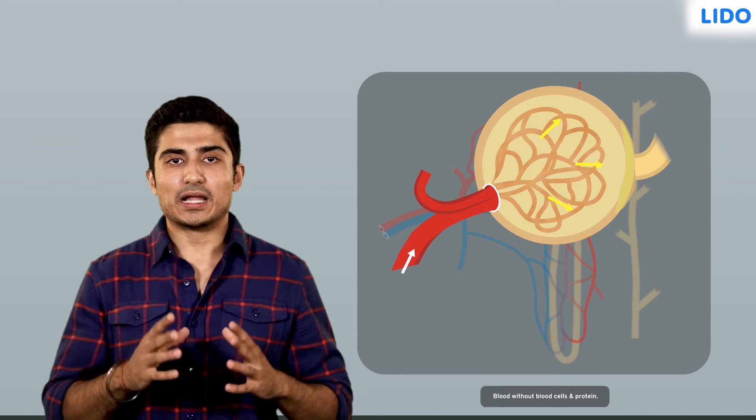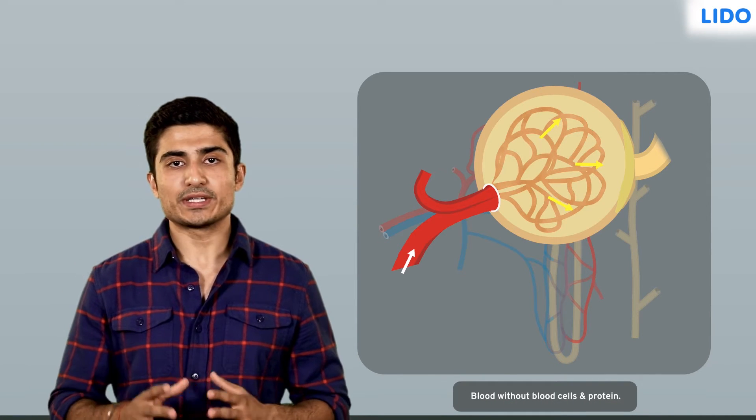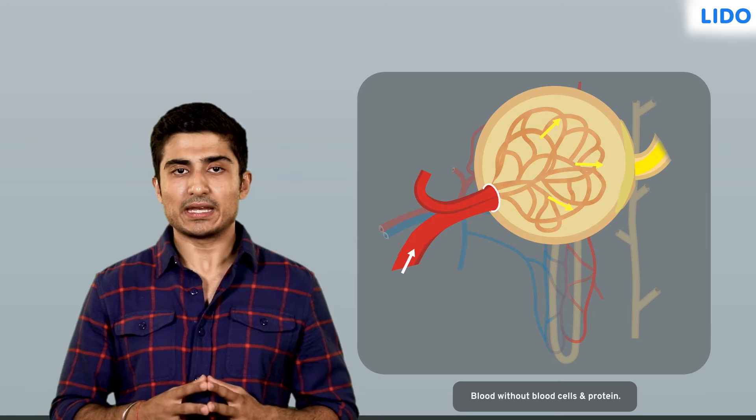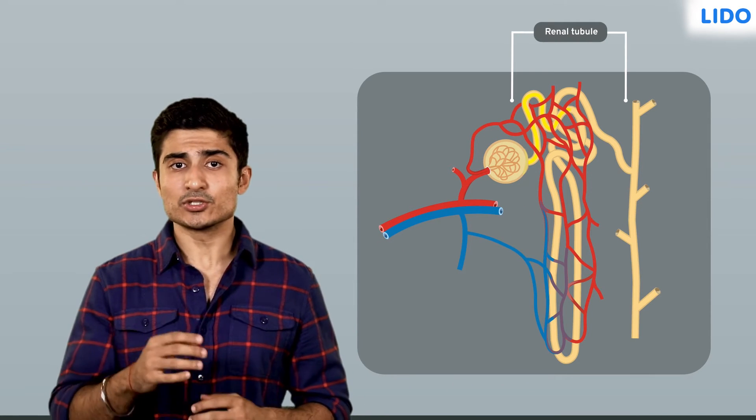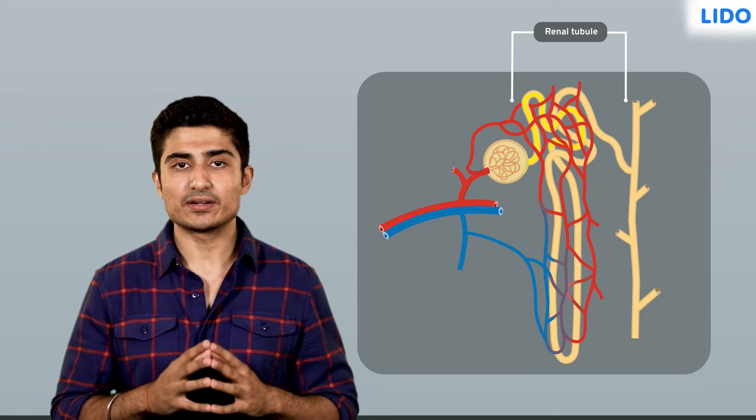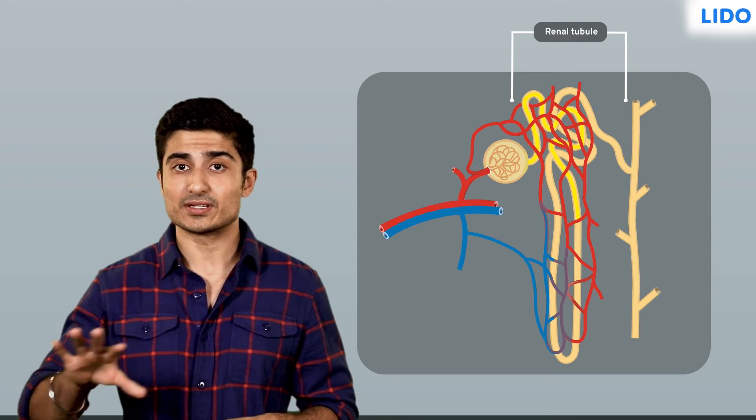At the same time, the blood without the blood cells and proteins, or filtrate, passes into the remaining parts of the renal tubule. It is in the renal tubules that the essential nutrients are retained back and the waste is removed out.